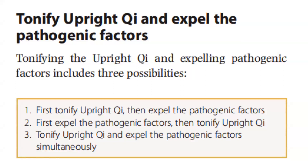Tonifying the upright chi and expelling pathogenic factors includes three possibilities. First, tonify upright chi, then expel pathogenic factors. First, expel pathogenic factors, then tonify upright chi. Or, tonify upright chi and expel pathogenic factors simultaneously.